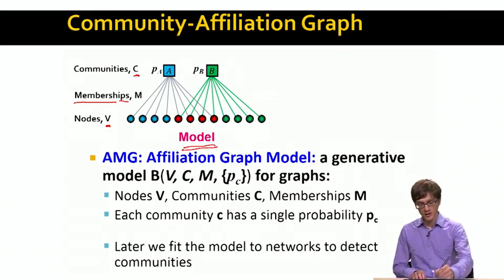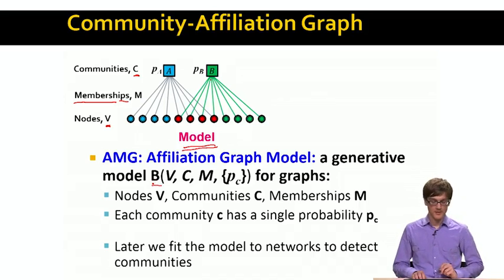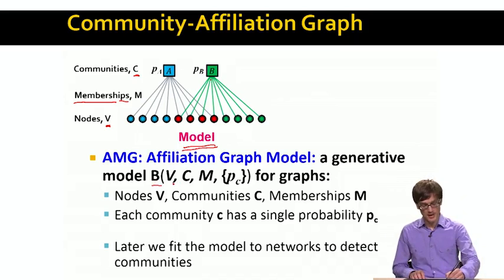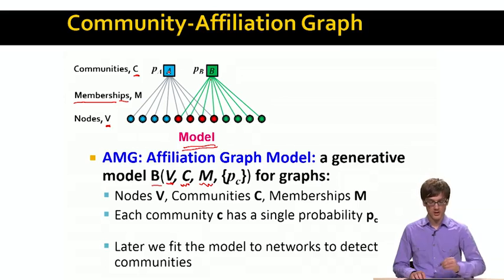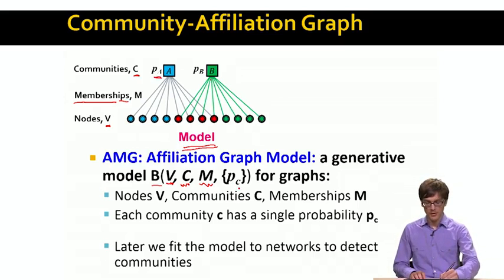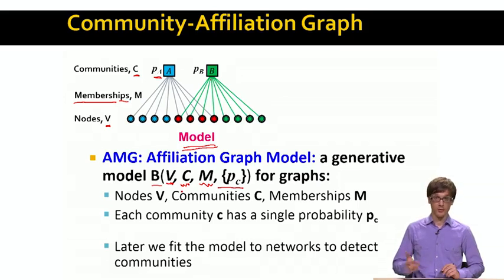Given this model, I will want to generate the network. The affiliation graph model is a generative model for networks, and it can be specified with four types of parameters: the set of nodes V, the set of communities C, the set of membership edges between nodes and their corresponding communities, and a single parameter per community — P_A, P_B, and in general a set P_C. The model is uniquely defined by this tuple of four different sets.